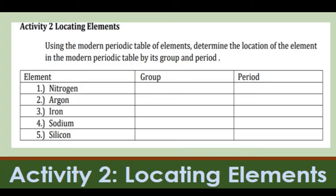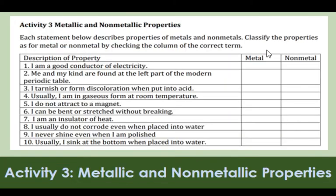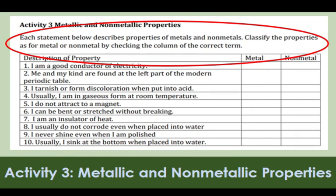Now, in connection with this, you have to answer Activity Number 2 entitled Locating Elements. Using the Modern Periodic Table of Elements, you have to determine the location of each element by its group and period. You also have to answer Activity Number 3 entitled Metallic and Non-Metallic Properties, where you read each statement and check whether the property described is for a metal or non-metal.